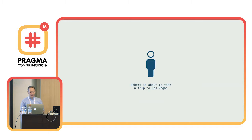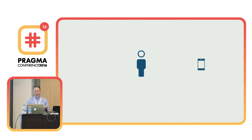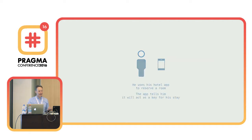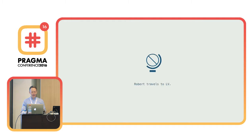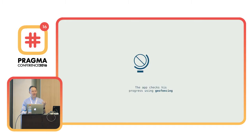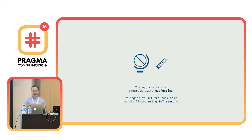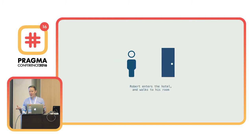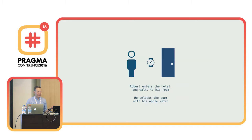I'm going to tell a story about Robert. Robert's going to take a trip to Vegas. He uses his hotel app to reserve a room; the app tells him it's going to act as his digital key. As he's flying to Las Vegas, crossing time zones, geofencing starts to check him out and understand where he is. That feeds back into the hotel room app and starts changing the thermostat in the room to a temperature that will make him happy. I'm always baffled by hotel thermostats — usually something from the 1960s that I'm not sure ever worked. This is a different way: it's learning, understanding his preferences.